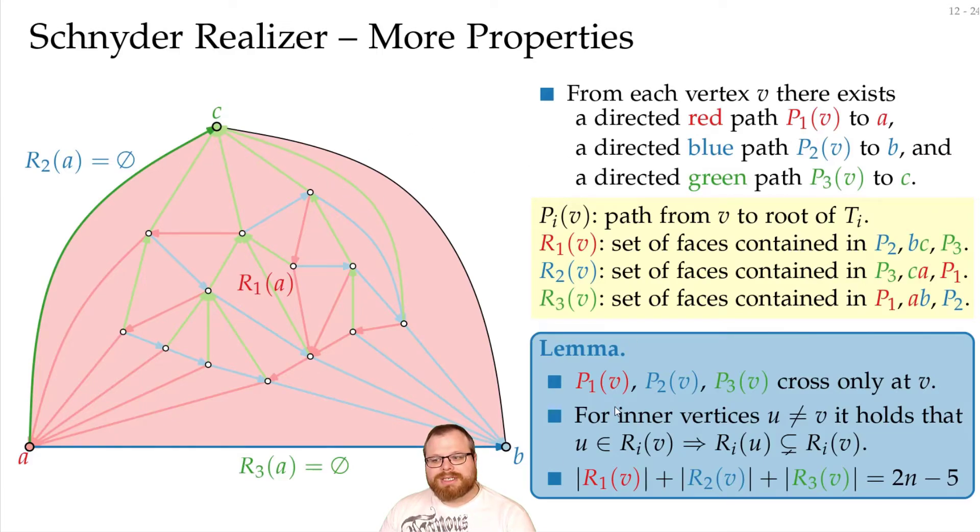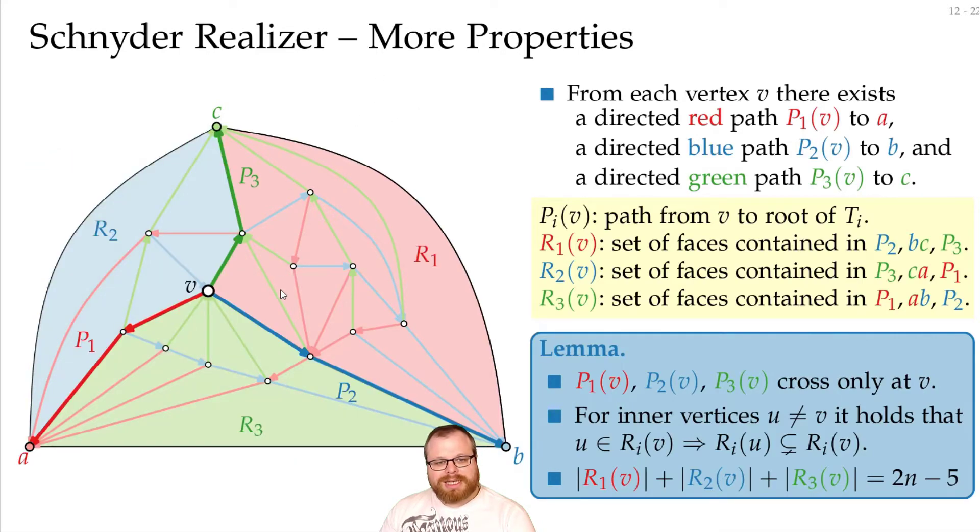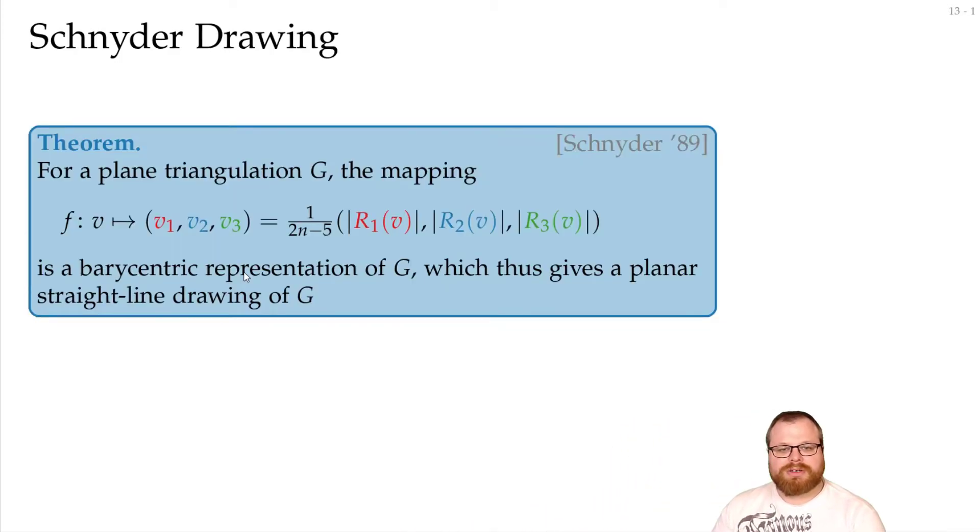And now these regions are the key for our barycentric coordinates. We just count how many faces do we have here, how many do we have here, how many do we have here, divided by 2n-5, and that gives us our barycentric coordinates. So with this mapping, we get a barycentric representation of g, and because it is barycentric, it is also a planar straight-line drawing.